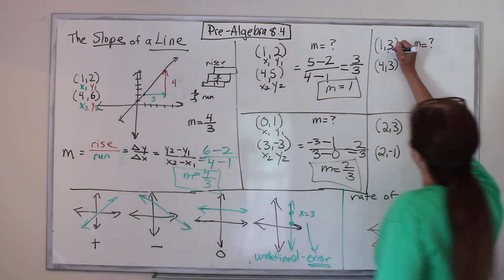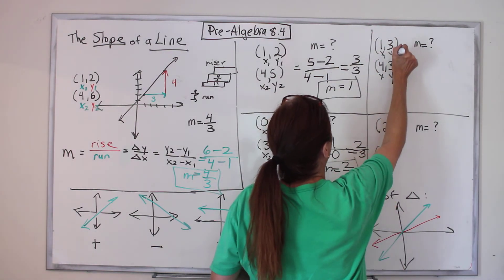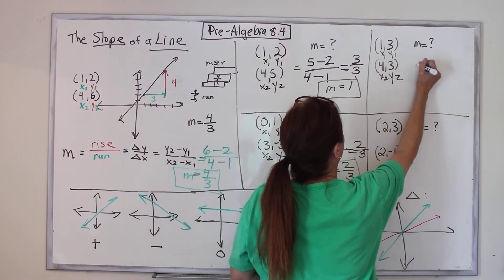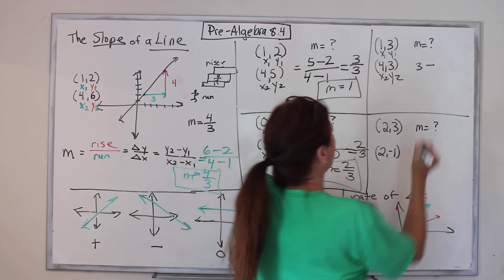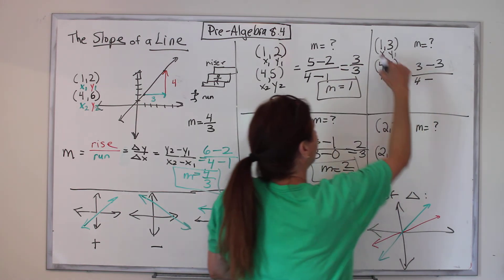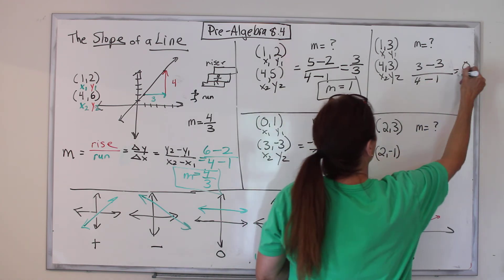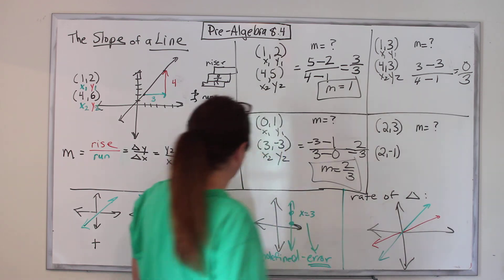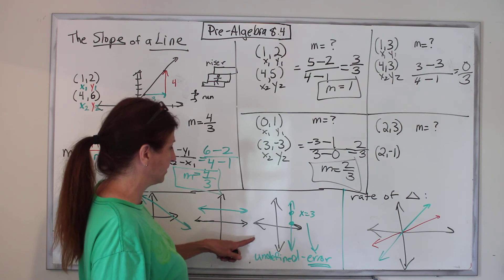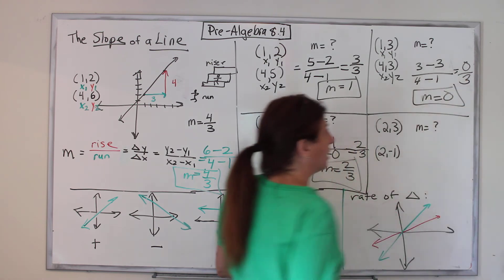Let's do this one. Step one: write down X and Y. Step two: which is less? One is less than four — those are the 1s, those are the 2s. Next step: find Y2, write it down. Write your minus. Write Y1. Draw your fraction bar. Find X2. Draw a minus. Find X1. Do the math: 3 minus 3 is 0, 4 minus 1 is 3. Remember the big rule — you cannot have 0 in the denominator — but here 0 is in the numerator, so 0 divided by 3 is 0. Slope equals 0.